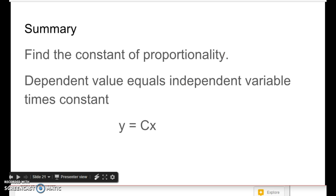So in summary, you find the constant of proportionality. The dependent value equals the independent value times the constant. So you have y, x is the independent value because you choose, do I swim 1 lap, do I swim 2 laps, do I swim 50 laps? You choose how many laps, and then the time it takes you to swim depends on how many laps you swim. So thank you for listening. Have a great day.